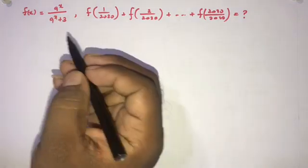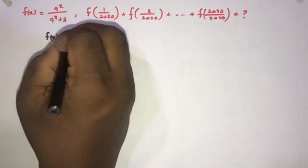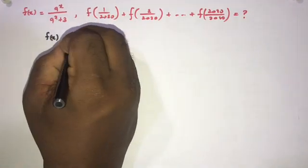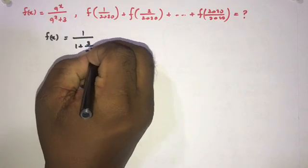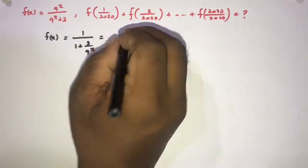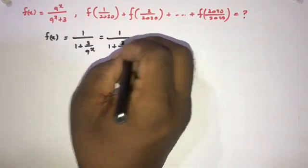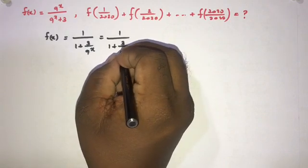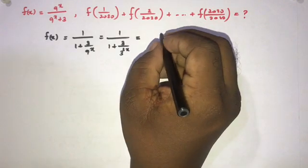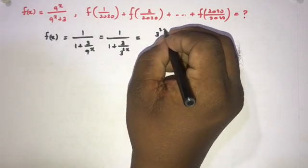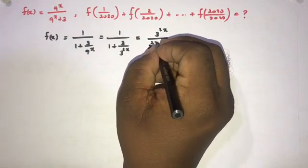To begin, if we divide both numerator and denominator by 9^x, we can write f(x) = 1 / (1 + 3/9^x). Since 9 = 3^2, this becomes 3^(2x) / (3^(2x) + 3).